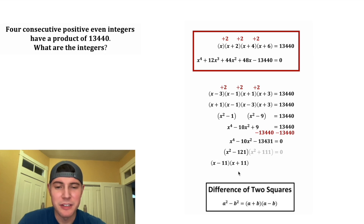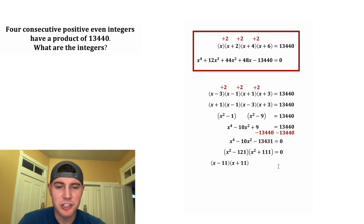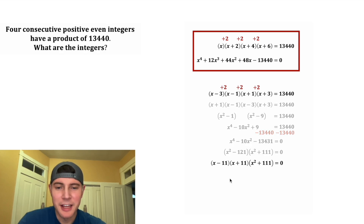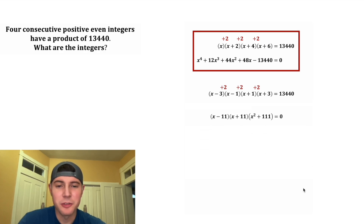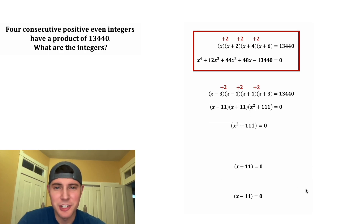Then x squared minus 121 is another difference of two squares, which gives us x minus 11 times x plus 11. We copy down the other factor, x squared plus 111, and now we have the expression fully factored.